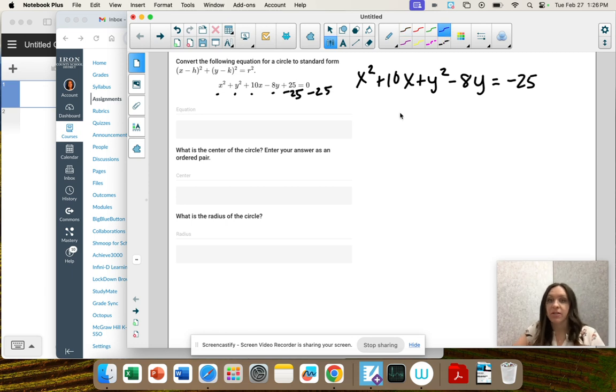Now we need to complete the square. So when we complete the square, remember, I'm going to write x squared plus 10x. And then I'm going to be adding some number here. Then I have y squared minus 8y. And then I'm going to be adding a number to complete the square.